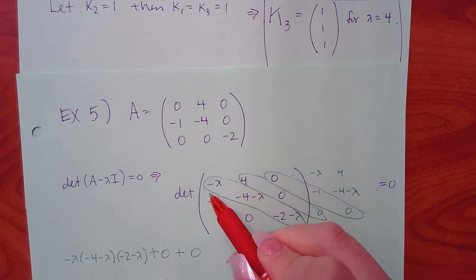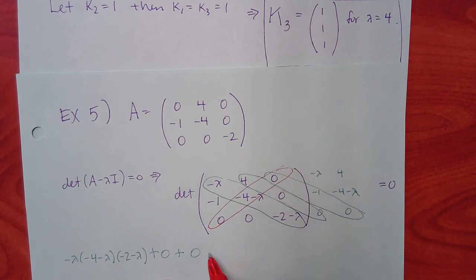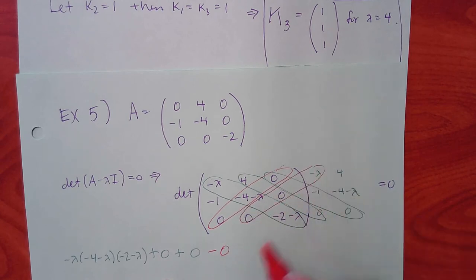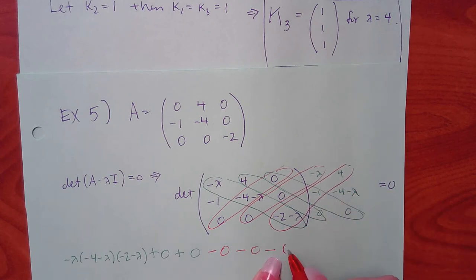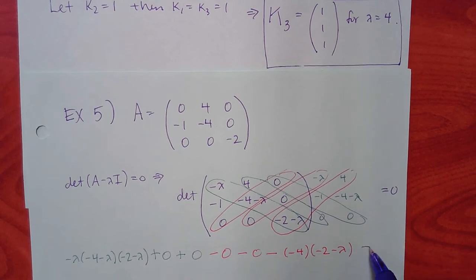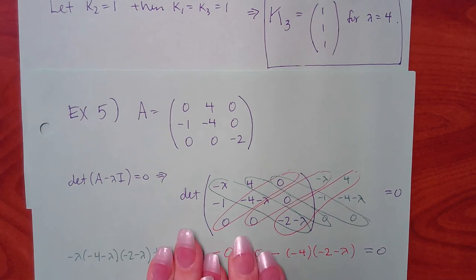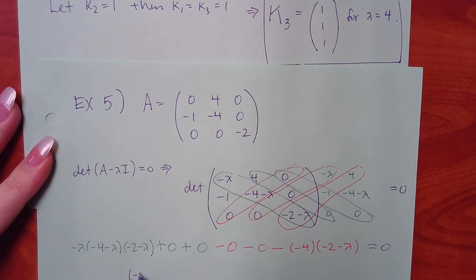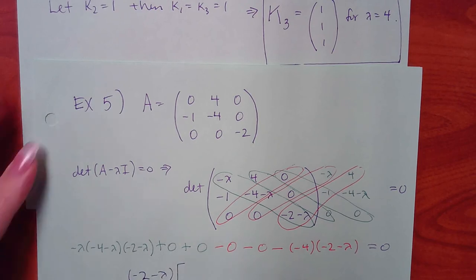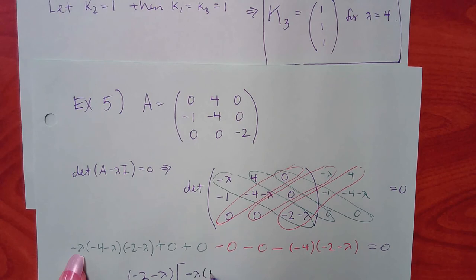The nonzero terms are: negative lambda times (negative 4 minus lambda)(negative 2 minus lambda) and positive 4 from the negative diagonal. These two terms share a common factor of (negative 2 minus lambda), so we factor it out, leaving negative lambda times (negative 4 minus lambda) plus 4.